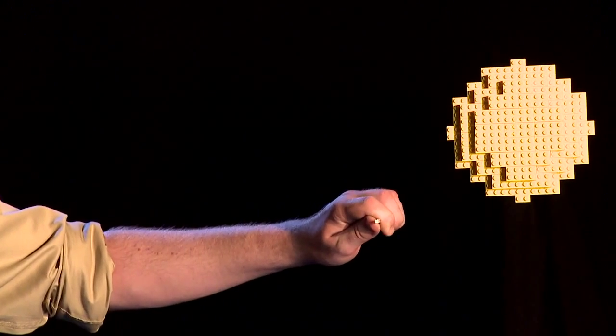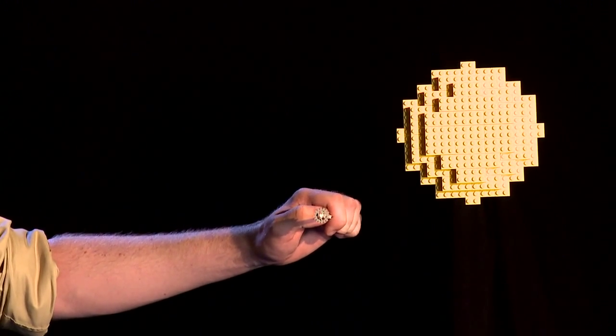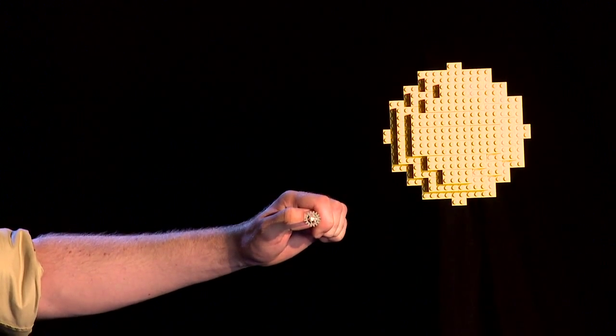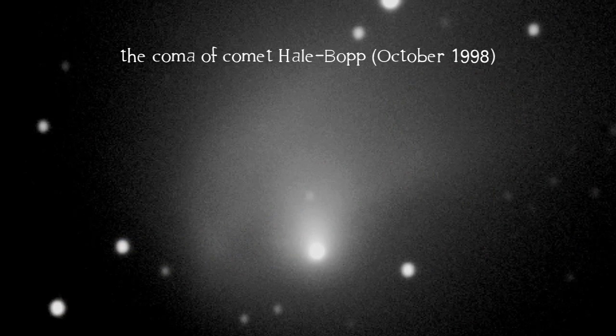As we approach the sun, ices on the surface start to sublime. They turn straight from solid to gas. In doing so, they form the coma of the comet, a transitory atmosphere, a cloud around the nucleus.